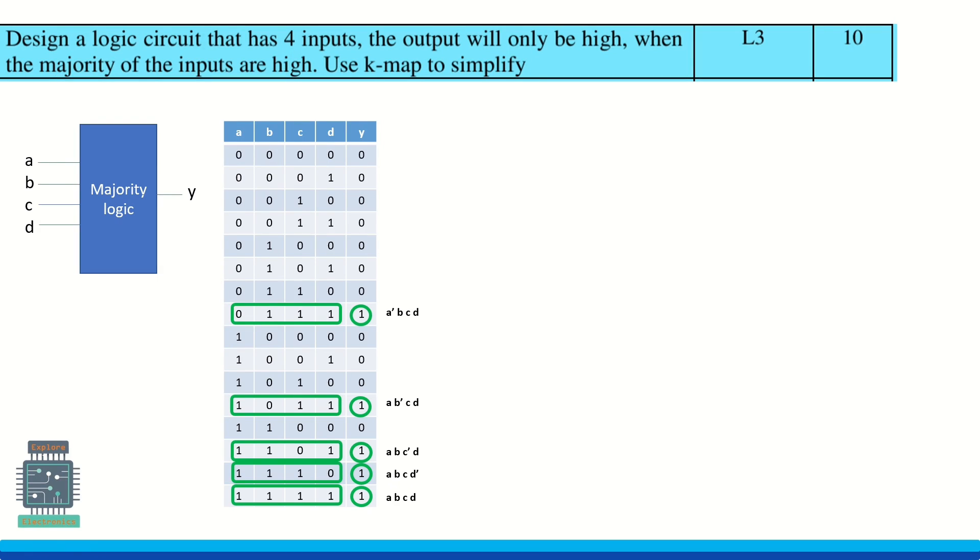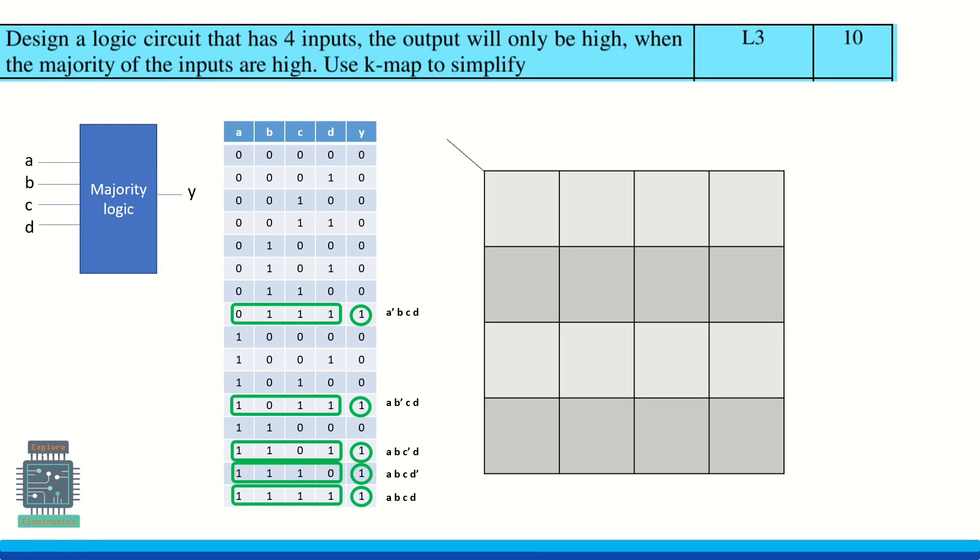Let us put it into the K-map. Here four inputs are there so we require a four variable K-map. So a, b I am taking vertically and c, d horizontally. And these are the positions correspondingly. Now the output is one over here. This corresponds to seven, and here it is eleven, then thirteen, fourteen, and fifteen. These are the positions we will be having one as output.